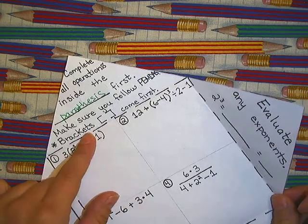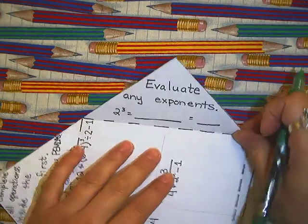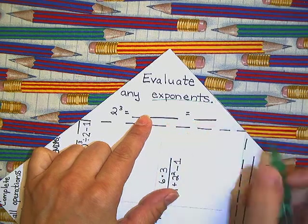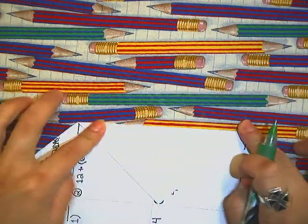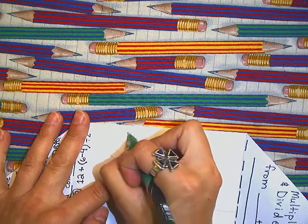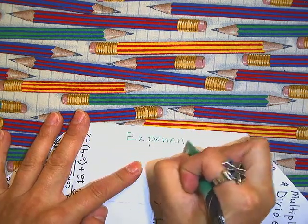Now we are going to look at your second step. After P comes the E, and that is for exponents. Go to the flap that says evaluate any exponents. We are going to fold that down and write exponents on there.